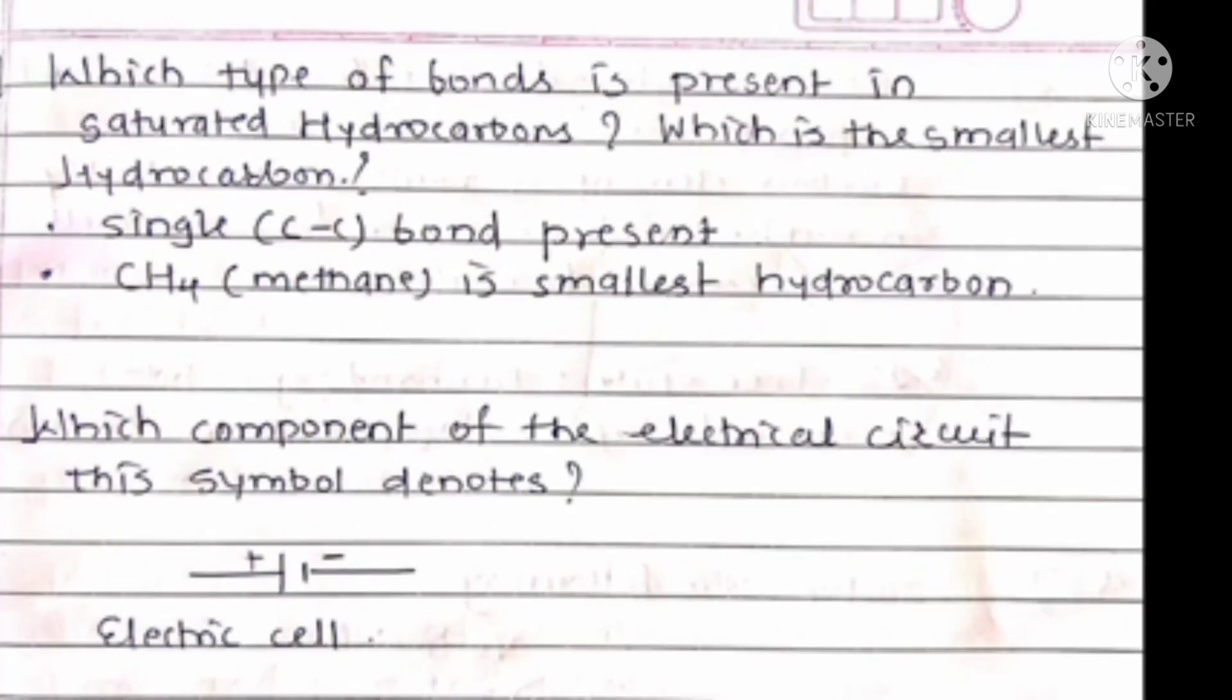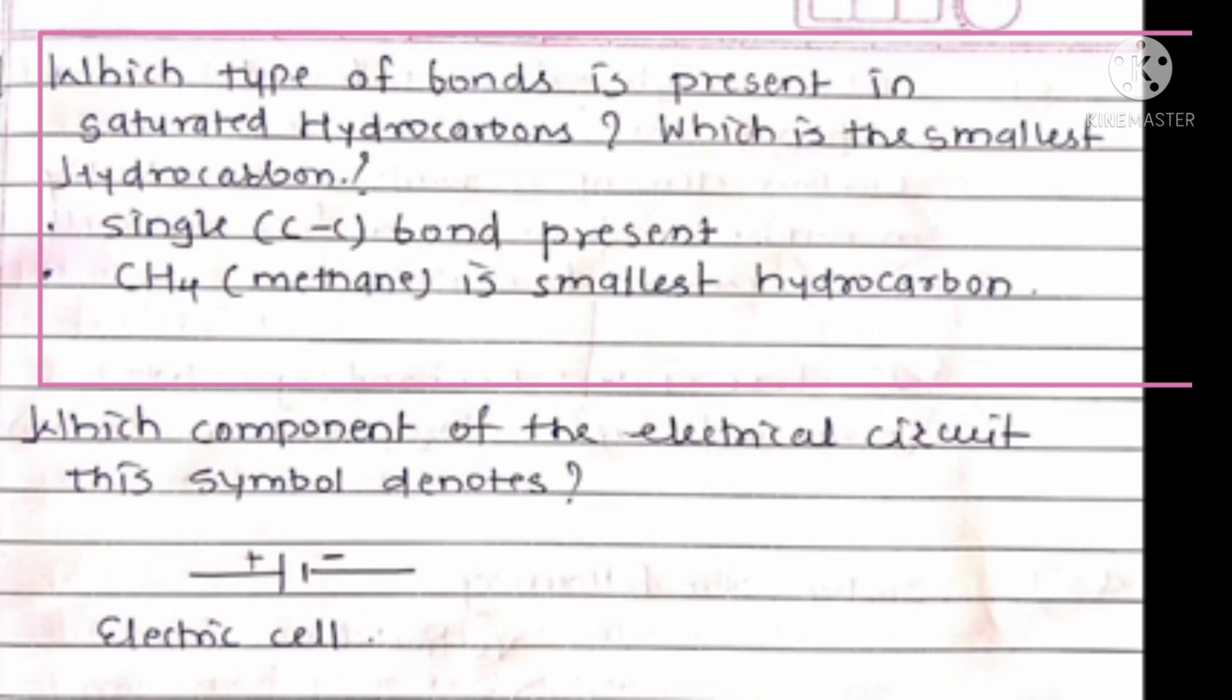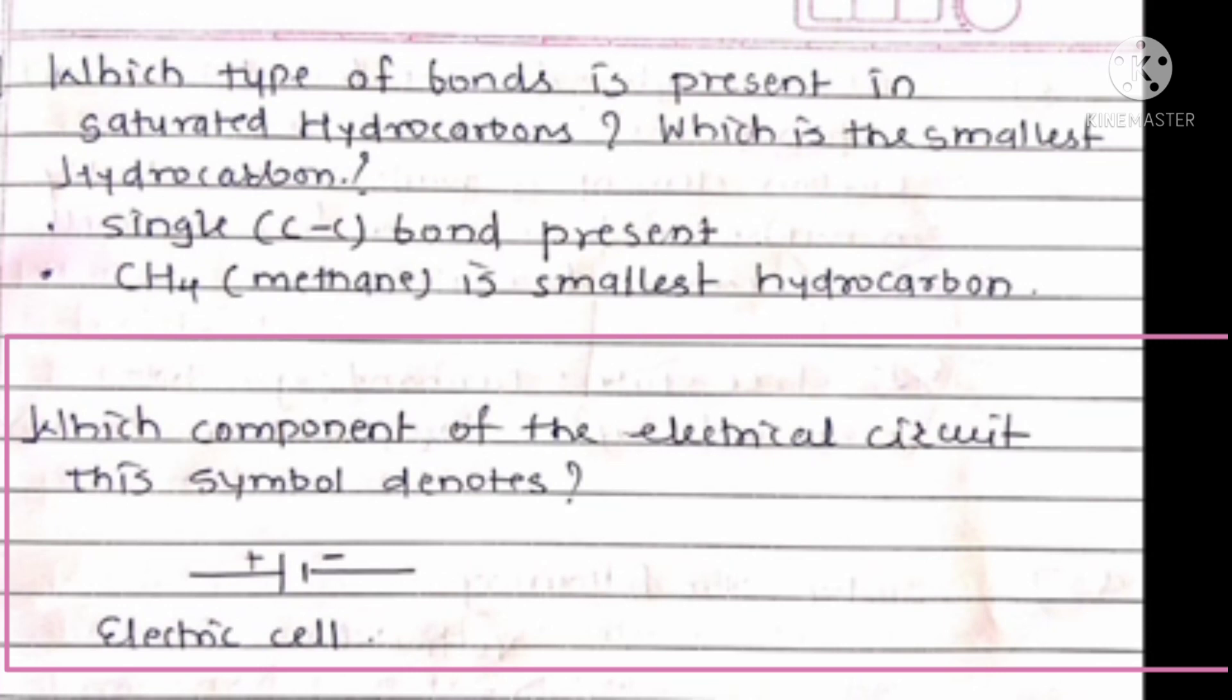Next question: Which type of bond is present in saturated hydrocarbons? Which is the smallest hydrocarbon? Carbon-carbon single bond present in saturated hydrocarbon and CH4 that means methane is the smallest hydrocarbon. Which component of the electric circuit does this symbol denote? The given symbol denotes electric cell.